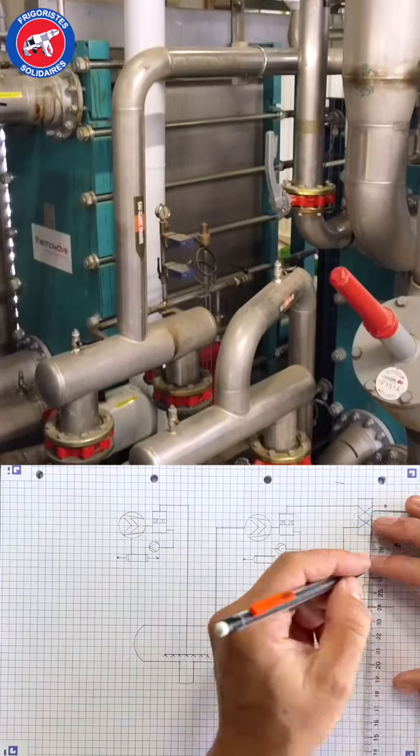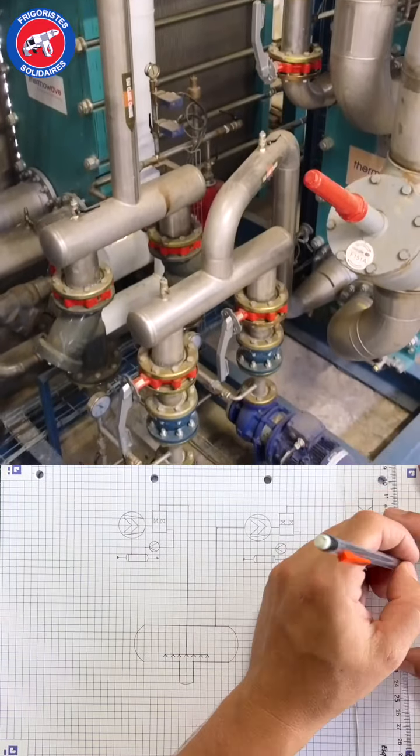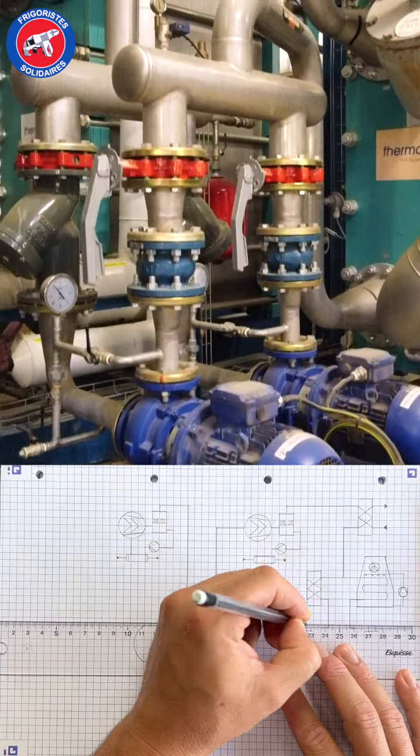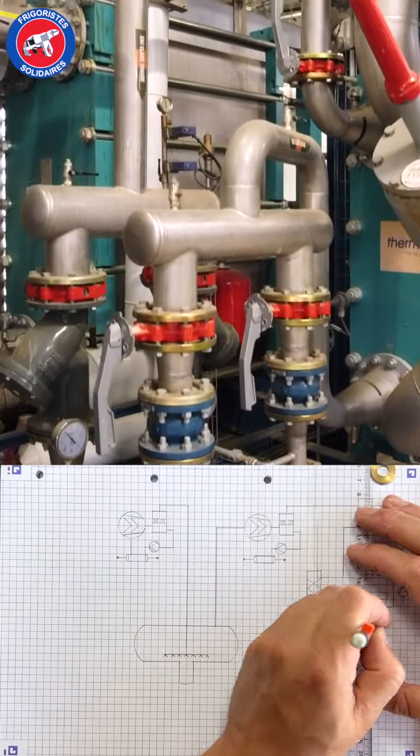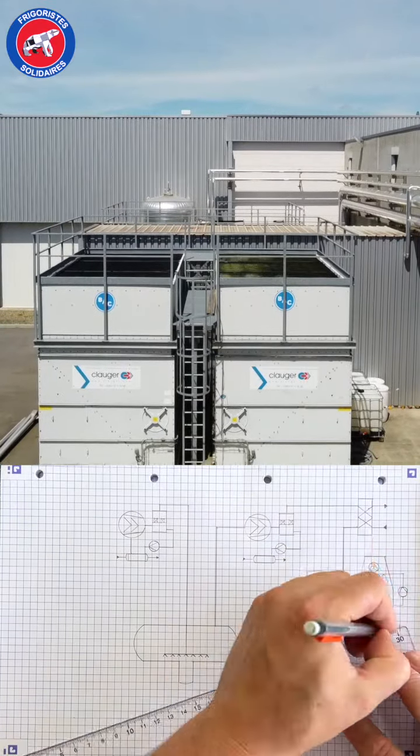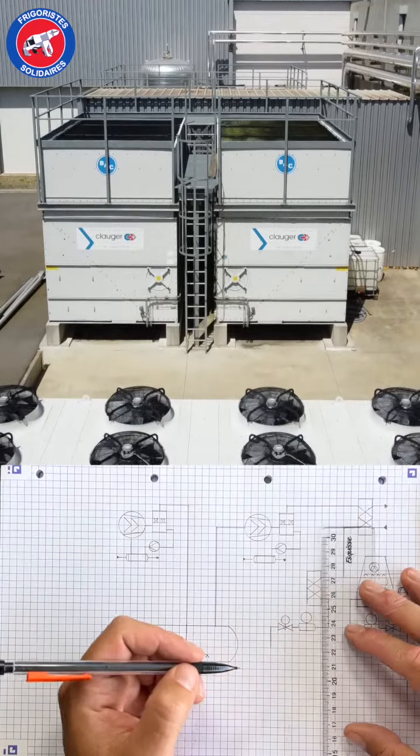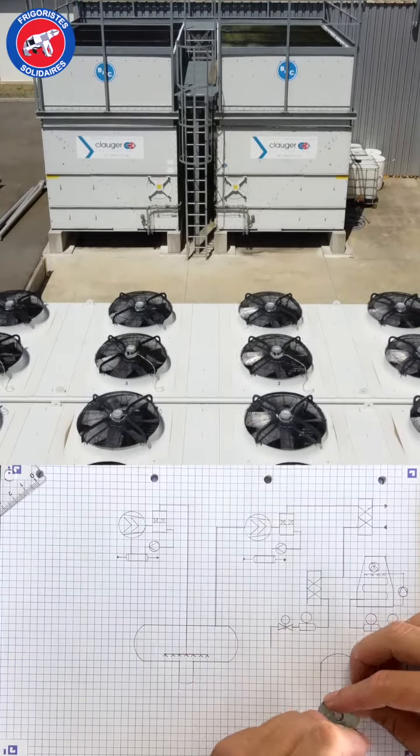A desuperheater exchanger recovers 400 kilowatts to heat water to 50 degrees C. Then the condensers evacuate the remaining energy either to pre-heat water or directly outside.